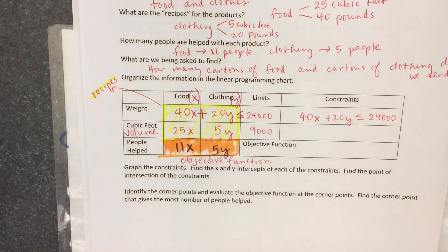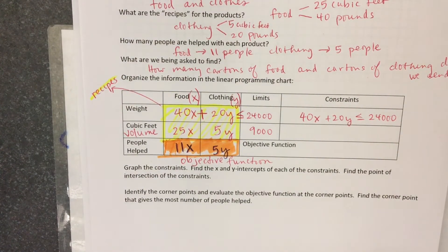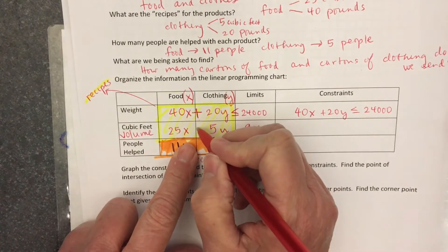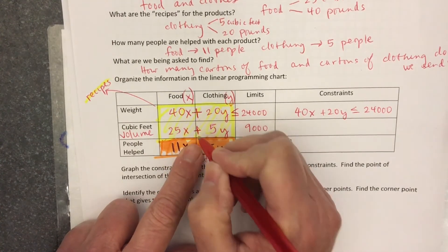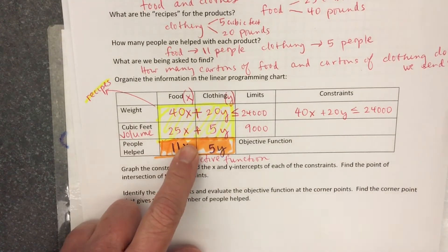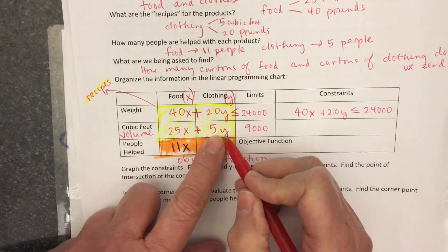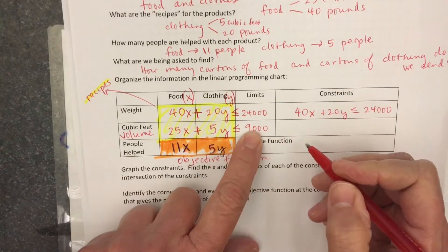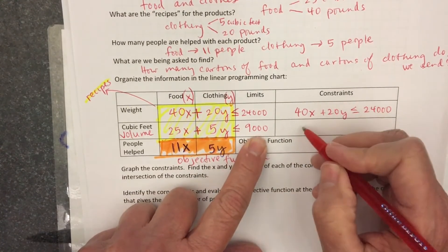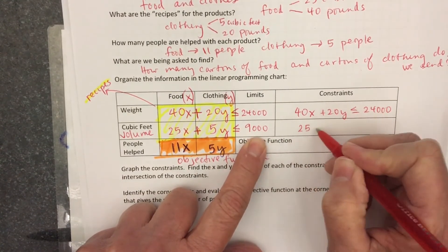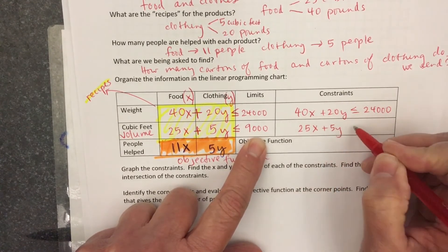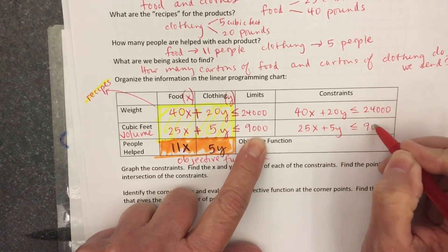For the volume in the airplane, same thing. We'll read it straight across. The volume, which is the space the food takes up, plus the space the clothing takes up, has to be less than or equal to 9,000. So the constraint is 25X plus 5Y is less than or equal to 9,000.